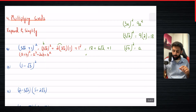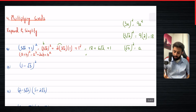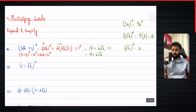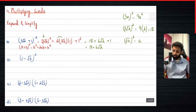We've done the expansion part. Now for the simplifying: 18 + 1 = 19, so the final answer is 19 + 6√2. I strongly encourage you to use your calculator to check your answer.